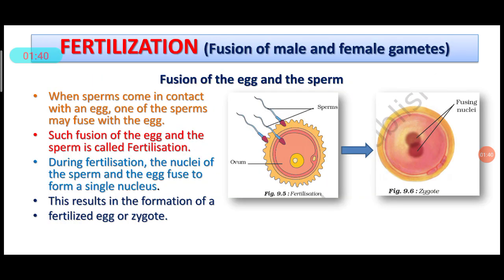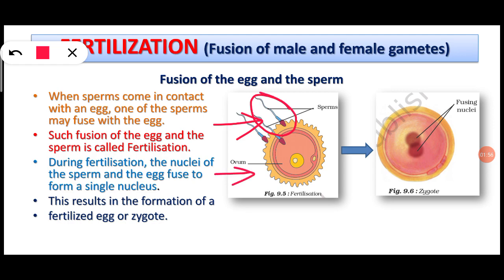The cause is that during fertilization, the cells from the male parent — that is, the father — known as sperm, fuse with the cell from the female parent, that is the ovum. During this fusion, the nucleus of the sperm and the nucleus of the egg fuse together to form the nucleus of the zygote.